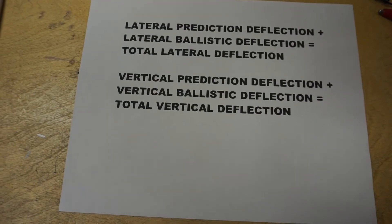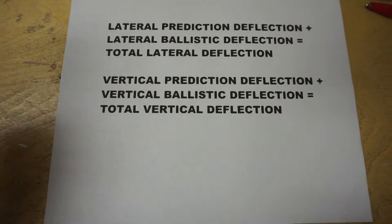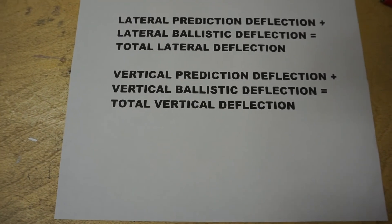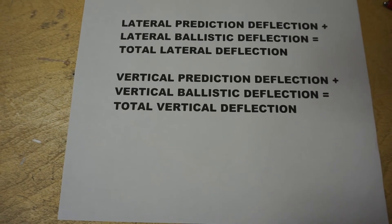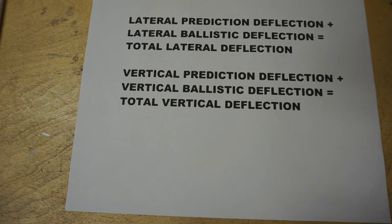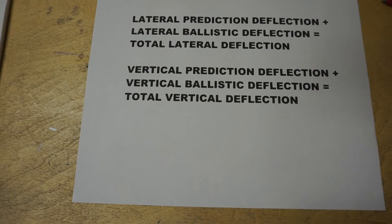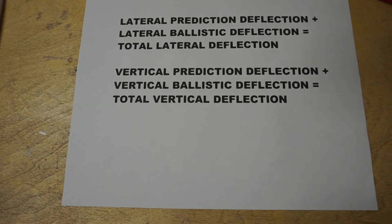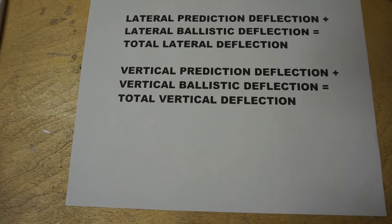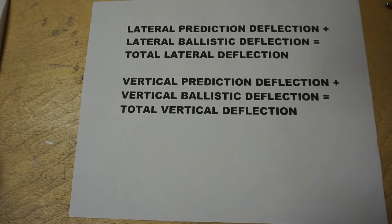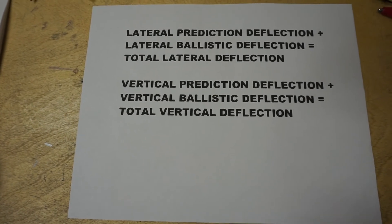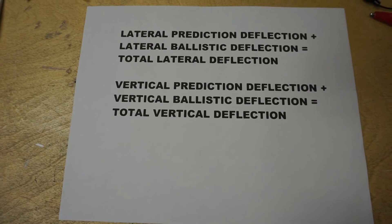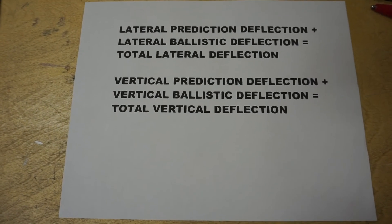Finally, the gun sight had to combine all of these predictions. It took the lateral prediction deflection — determined by time times the azimuth rate change — and the lateral ballistic deflection, to produce the total lateral deflection. Similarly, it took the vertical prediction deflection — vertical rate times time — and the vertical ballistic deflection, giving the total vertical deflection. It was able to combine all of these with the range to come up with the exact aiming point for the gunner.